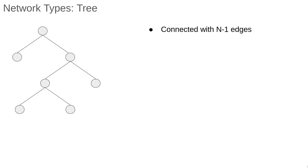So formally, a tree is a connected network with n minus 1 edges, such that every subgraph has at least one vertex with degree 0 or 1, this just means that each subgraph is also a tree, and there are no cycles.